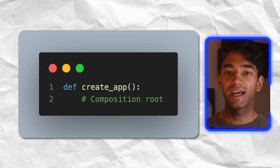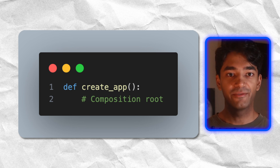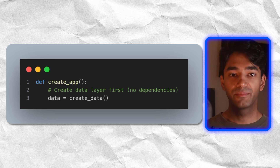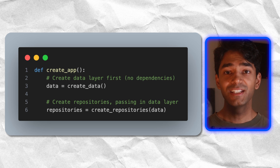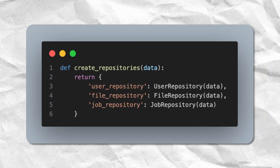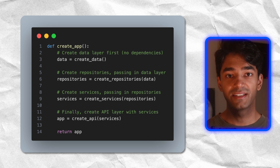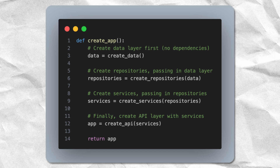To start off, I've got this create app function, which is called the composition root — basically a single place where all of our layers get created and wired together. Within this function, we start off by creating the bottommost layer, our data layer. Since it has no dependencies, it becomes the foundational layer of our application. Next, we create the repositories that our app requires, passing in the data layer as the only dependency. Then we create our service layers while passing in the repositories as their only dependency. Finally, we create our API layer by passing it the service layers as dependencies. Because the API layer uses Flask, its implementation might look something like this.